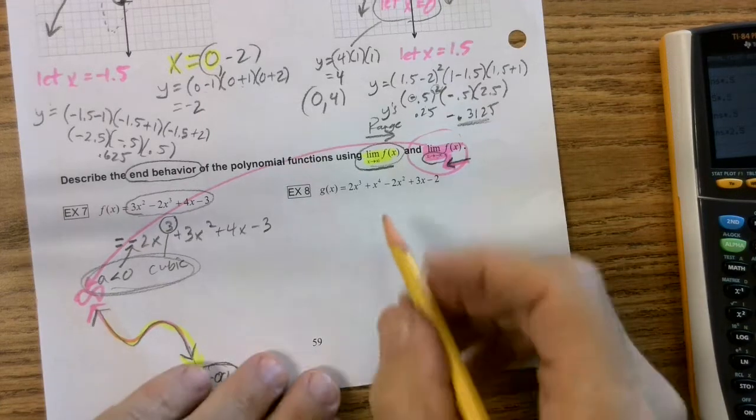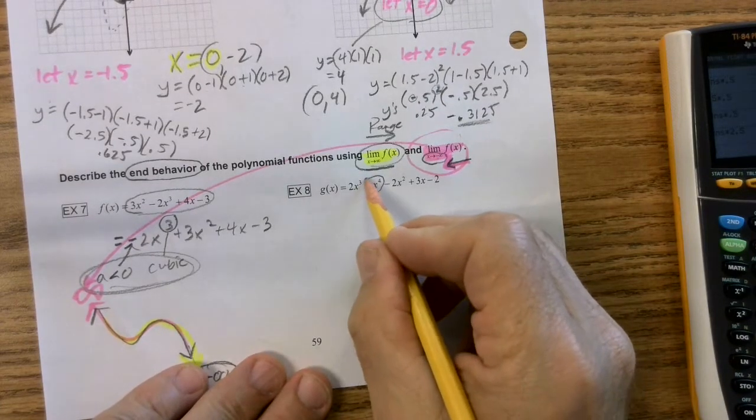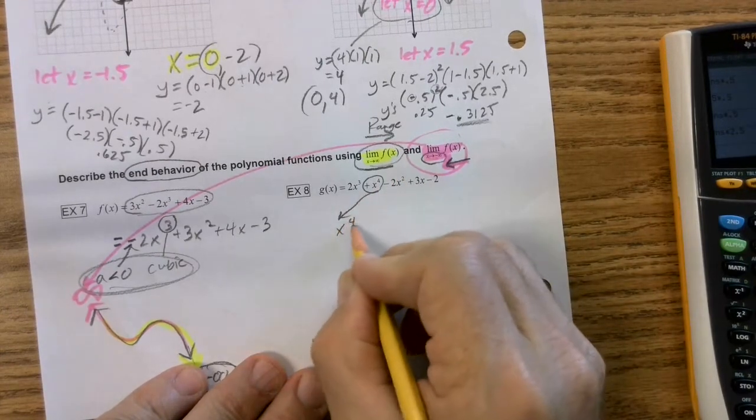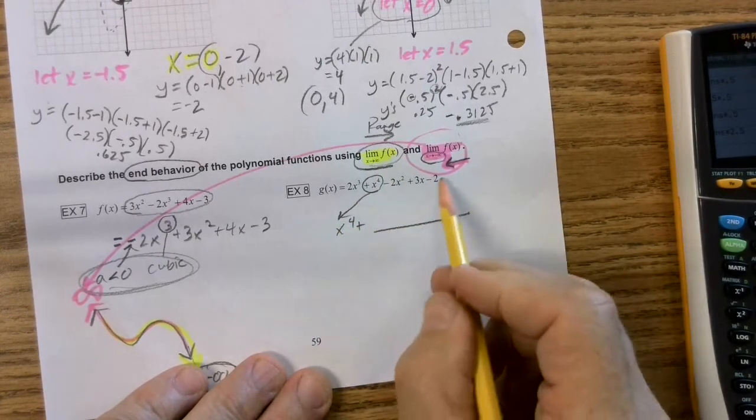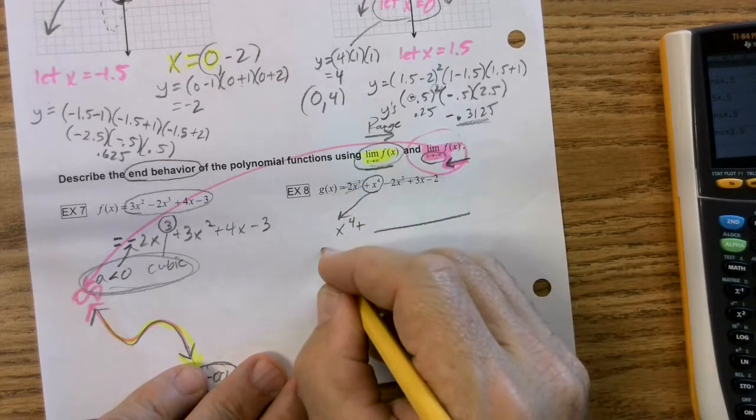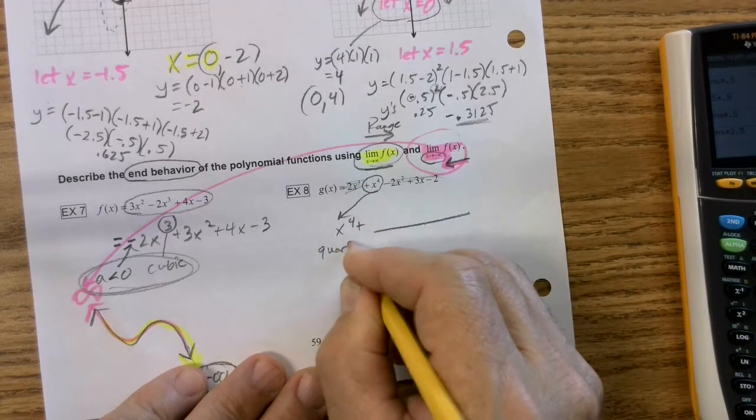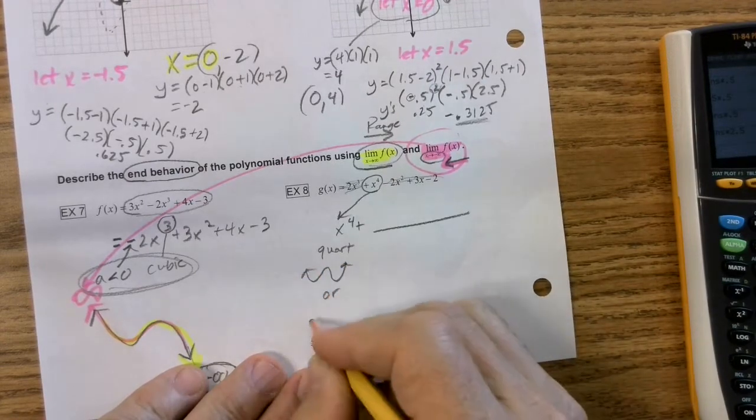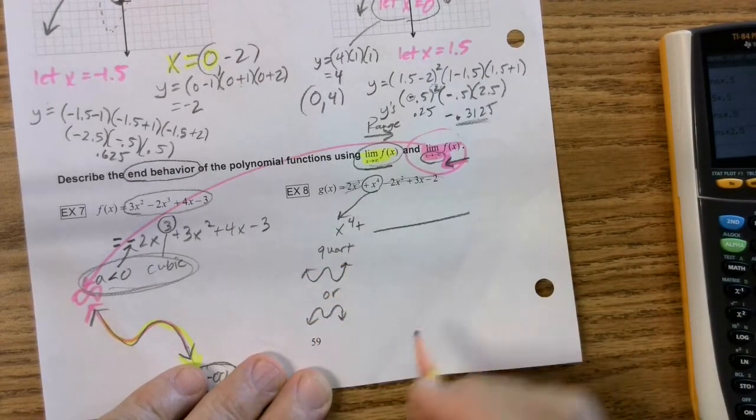Let's go to this one. Last one, guys. Here's my x to the fourth. I know that's the one that needs to start, and then all the rest doesn't really matter because this is a quartic, which means it's going to be like this, or it's going to be like this. See, this is easy to memorize. Anyways.